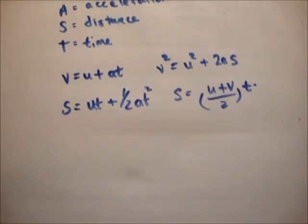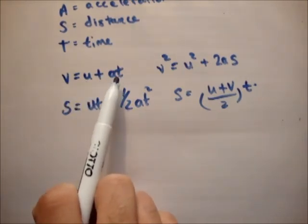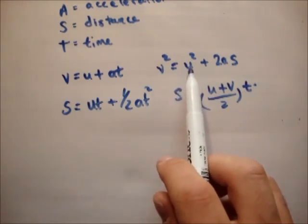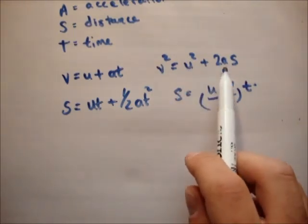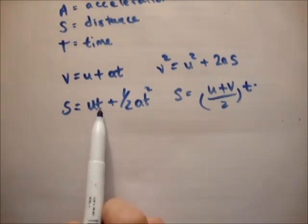So that's really it. The final velocity is equal to the initial velocity plus the acceleration times the time. The final velocity squared equals the initial speed squared plus twice the acceleration times the distance. The distance equals initial speed times the time plus a half of the acceleration times the time squared.